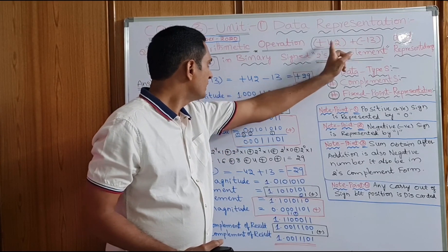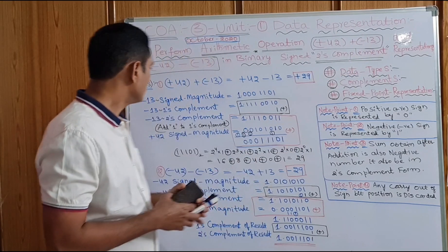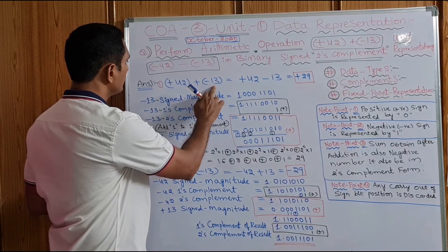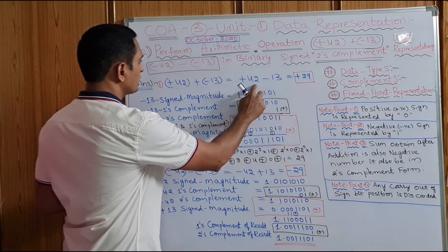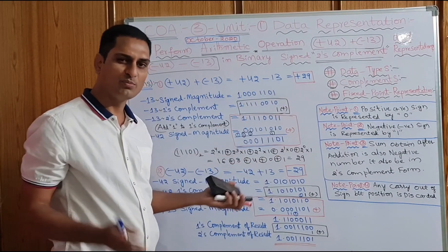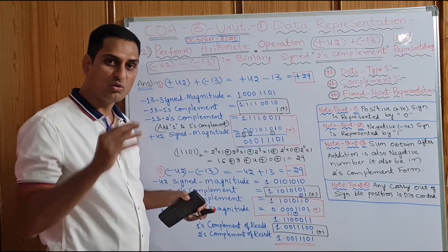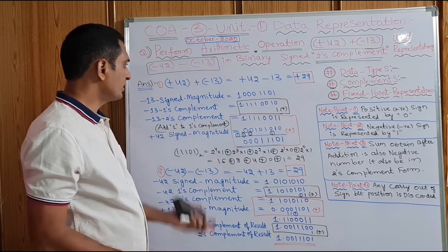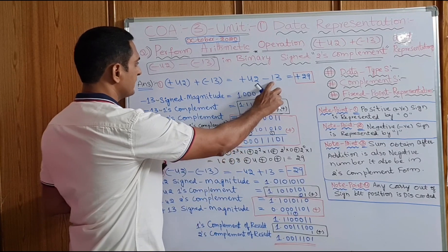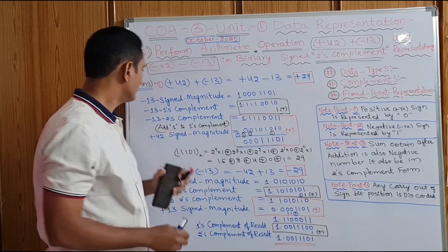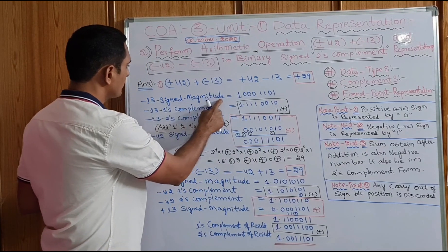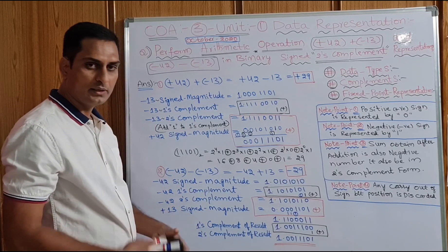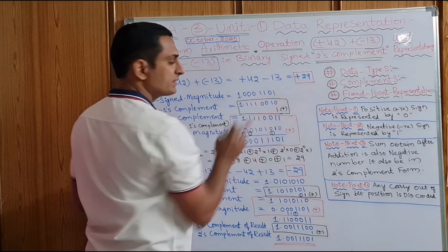The first question is plus 42 plus of minus 13, which means plus 42 minus 13 equals plus 29. The simple answer we know, but the thing is how the computer will do it internally with zeros and ones. Now we are going to discuss that. Minus 13 is a negative number and can be represented in three ways.